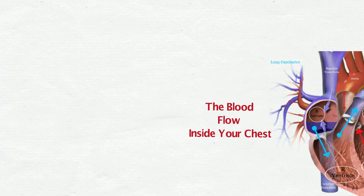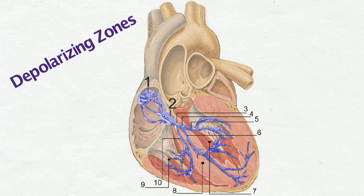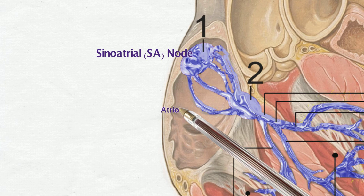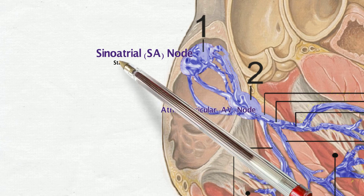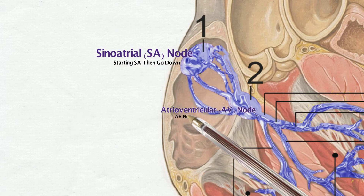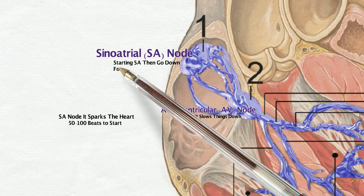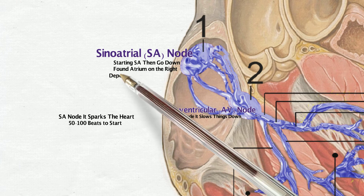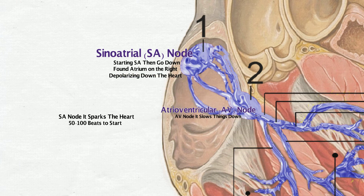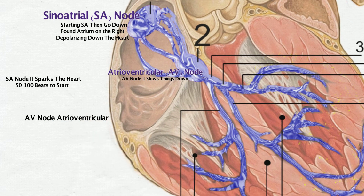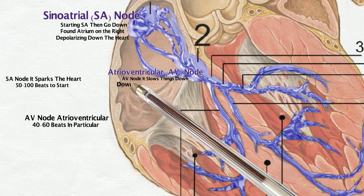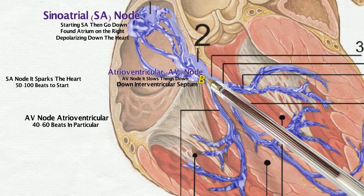Depolarizing zones: SA node and AV nodes. Starting SA then go down to AV node — it slows things down. SA node it sparks the heart, 50 to 100 beats to start, down atrium on the right, depolarizing down the heart.